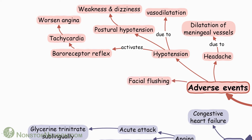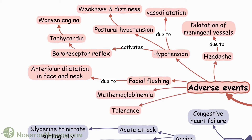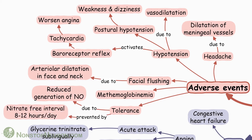Another adverse event is facial flushing due to arteriolar dilatation in the face and neck. They can also cause methemoglobinemia. Finally, development of tolerance is a big problem with nitrates — it possibly occurs due to reduced generation of nitric oxide, and can be prevented by a nitrate-free interval of 8 to 12 hours a day.